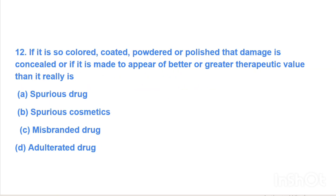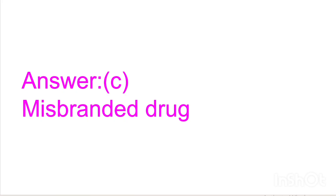Next question: If a drug is so colored, coated, powdered, or polished that the damage is concealed, or if it is made to appear of better or greater therapeutic value than it really is — Option A: spurious drug, Option B: spurious cosmetics, Option C: misbranded drug, Option D: adulterated drug. Answer is Option C, misbranded drug.